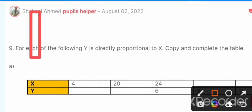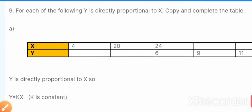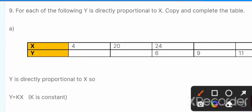The table which is given has values of x as 4, 20, 24, and values of y as 6, 9, and 11. In column 4 they have given the values of both x and y — the value of x is 24 and the value of y is 6.